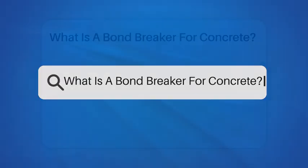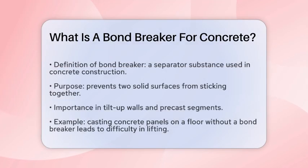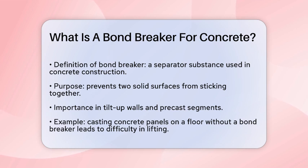What is a bond breaker for concrete? If you're working on a construction project and you've heard the term bond breaker, you might be wondering what it's all about. Let's break it down to understand its role in concrete construction. A bond breaker is essentially a separator substance that you apply between two solid surfaces to prevent them from sticking together. This is particularly important in concrete construction, especially when dealing with tilt-up walls and precast segments.